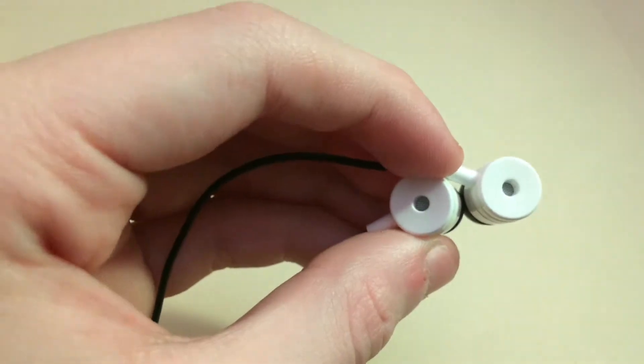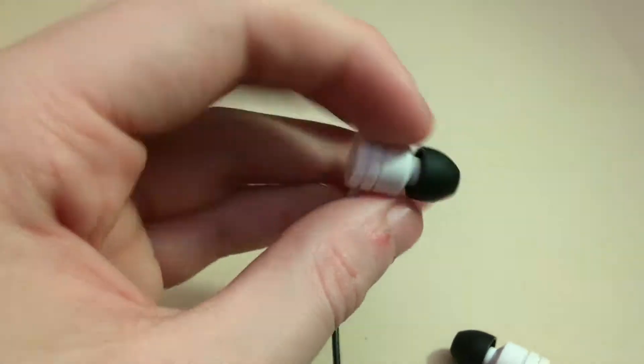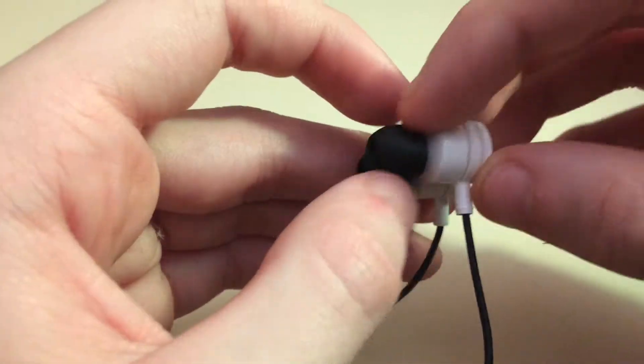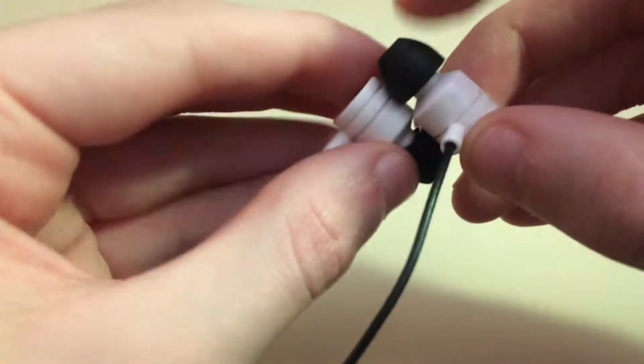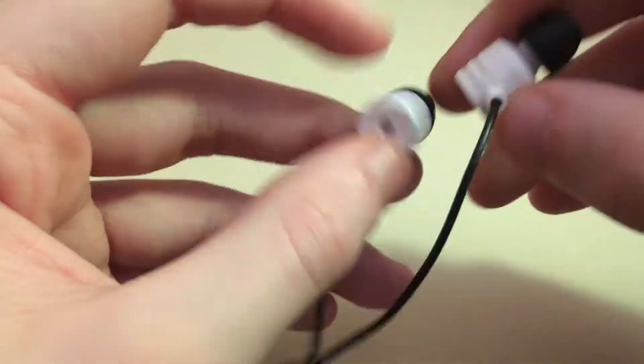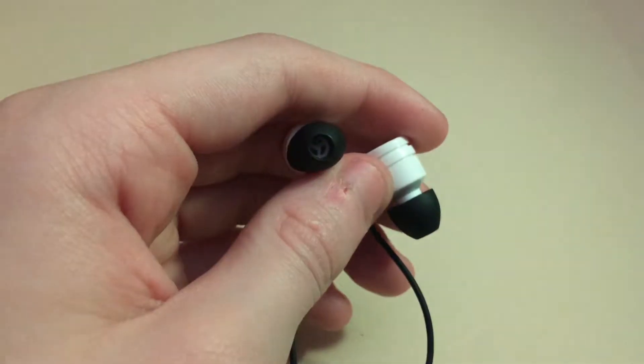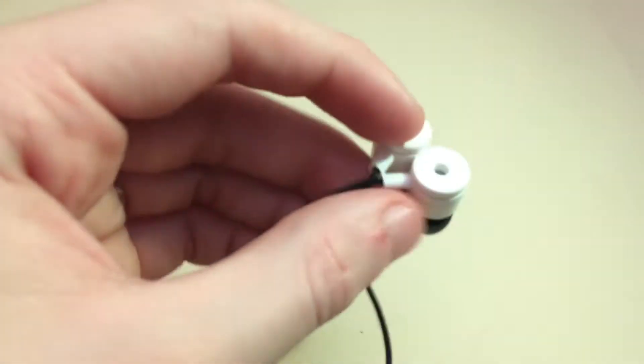The next one is liquid. Make sure no liquid is exposed to earbuds unless they can be with them. If they're waterproof or water resistant, then that's okay. But if they're not, just don't let any water or any kind of liquid get in them. That could just make them stop working.